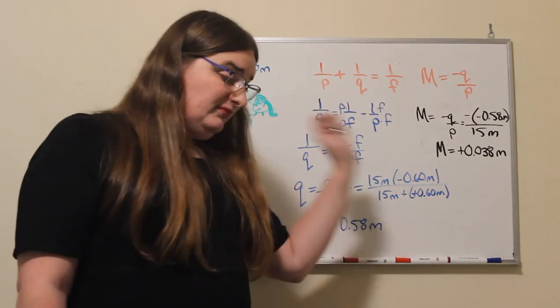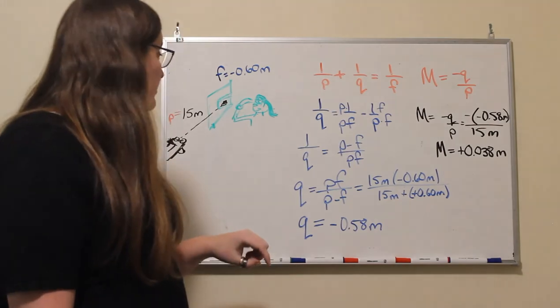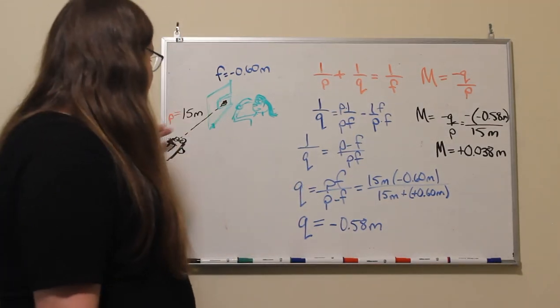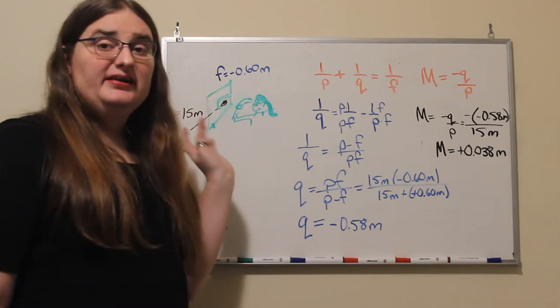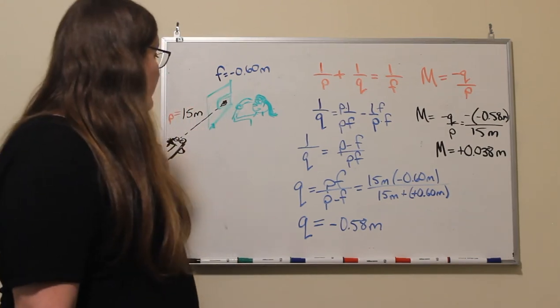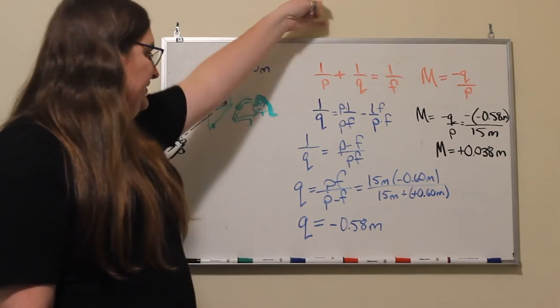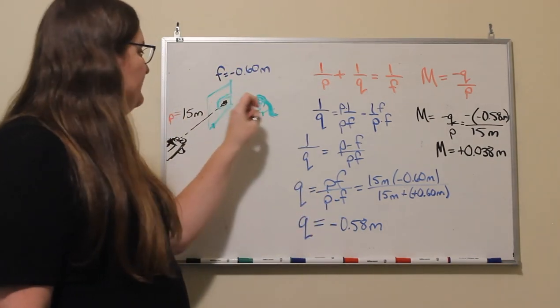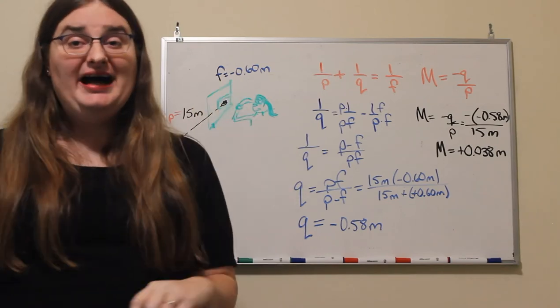Now if we were to have a flat plane mirror, then what would end up happening is this car is this distance p away, the image would be 15 meters away inside the mirror. And then there would be a little bit of a travel distance for that light to get from the mirror to our eye.